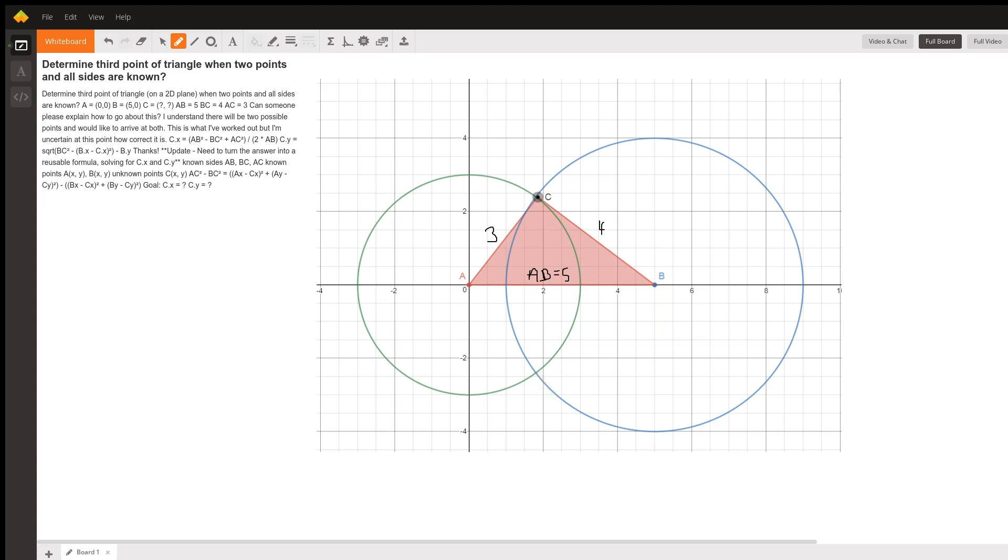So the equation of the green circle is center at the origin, so X squared plus Y squared equals the radius squared. That equals 9.